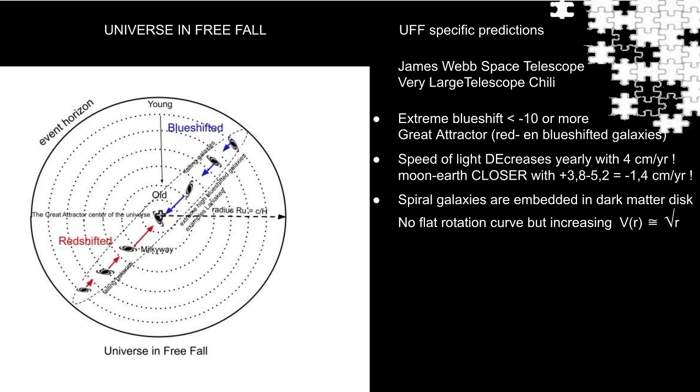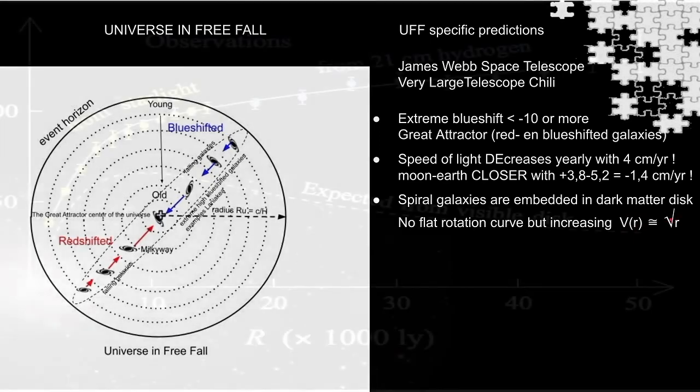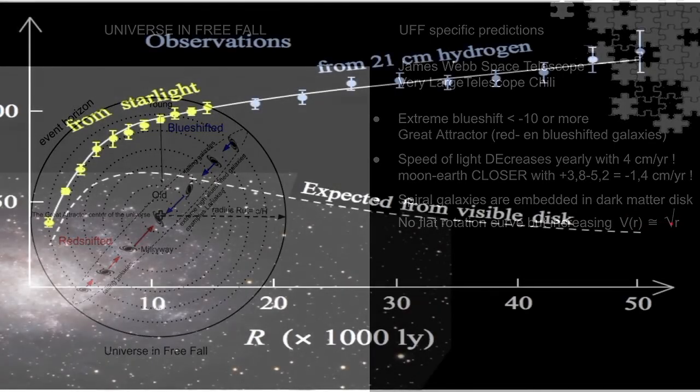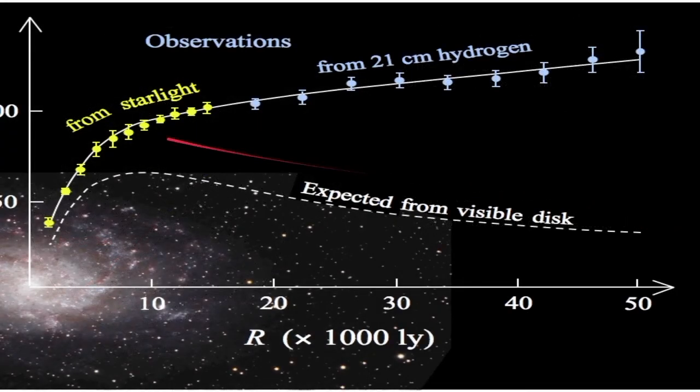If all spiral galaxies are embedded in a huge disk of dark matter dotted with stars, then calculations show us that the rotation speed, VR, of any matter particle that is rotating around the center of a galaxy is proportional with the square root of r. I'll show this in later videos, of course, in more detail. So this calculation may explain the slightly increased rotation curves, even in the outskirts of the galaxy disk where only neutral hydrogen has been found.